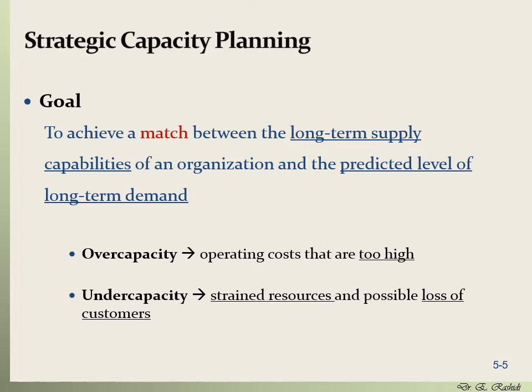An organization can be over-capacity or under-capacity based on its ability to respond to market demand. If an organization operates over capacity, it has a lot of resources it is not using, which means operating costs are too high. When an organization operates under capacity, it cannot supply and respond to market demand, resulting in the possible loss of customers and disappointed customers.